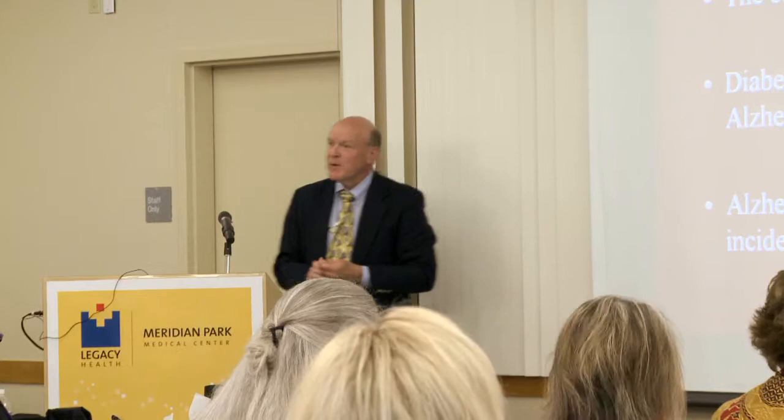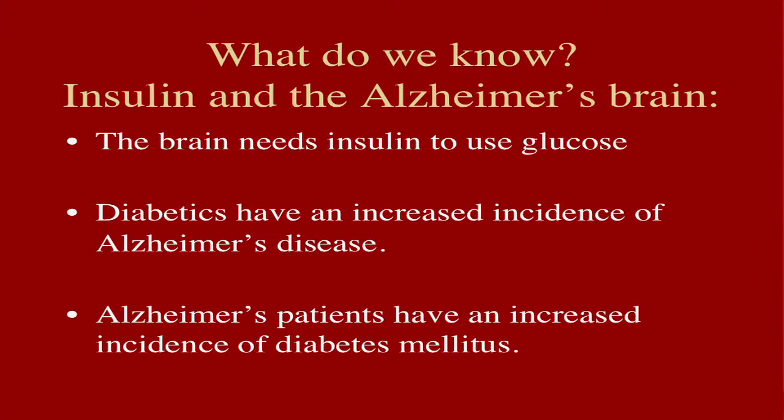That's one potential therapeutic target. Another one has to do with insulin signaling. Everyone knows insulin has something to do with diabetes; it turns out that the brain also needs insulin, and the brain is particularly dependent on insulin signaling. It's also true that people who have diabetes have an increased incidence of Alzheimer's disease — we don't quite know the whole mechanistic pathway explaining that, but it is a fact. Diabetics have an increased incidence of Alzheimer's disease.